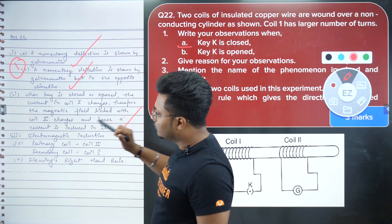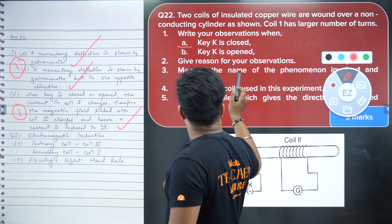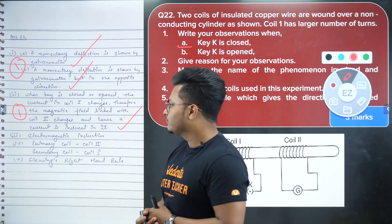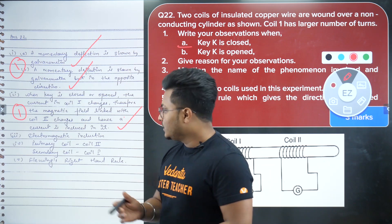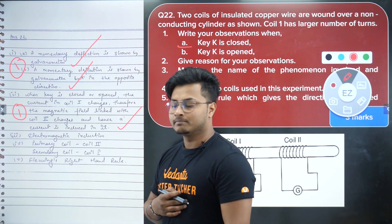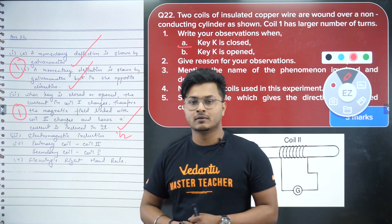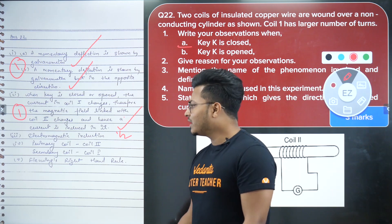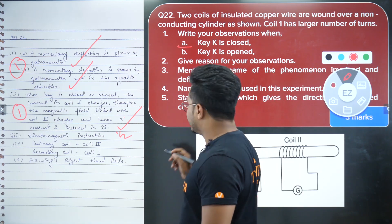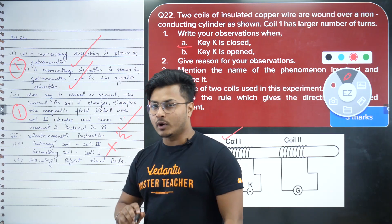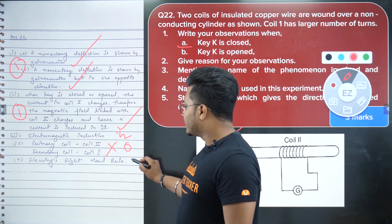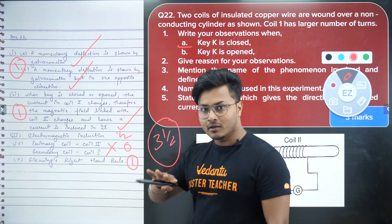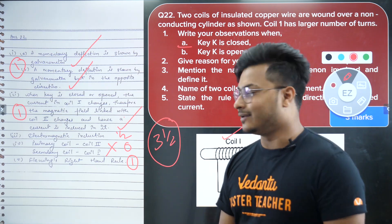Number four — naming the two coils — is completely wrong. Primary coil is coil one and secondary coil is coil two, but the student has written it the other way around. Zero marks. Number five — Fleming's right-hand rule — is named, so one mark. Total marks for this student: three and a half marks out of five. That half mark depends on the examiner's discretion.